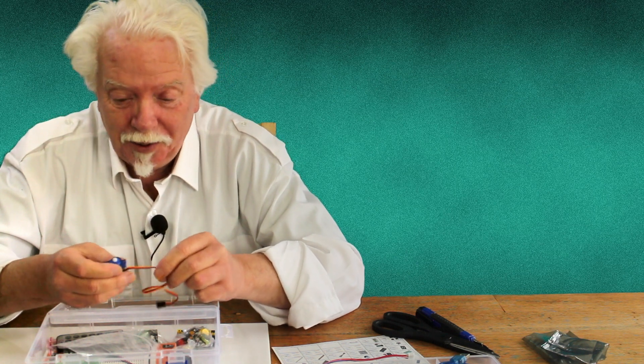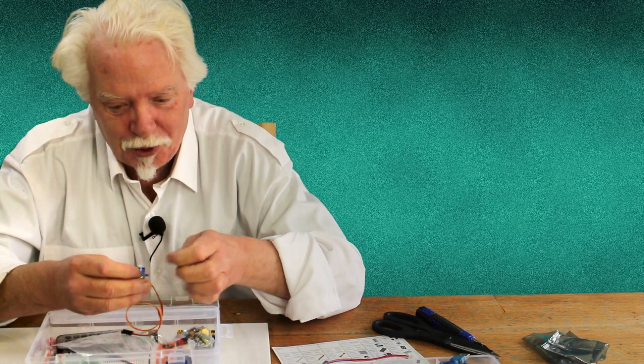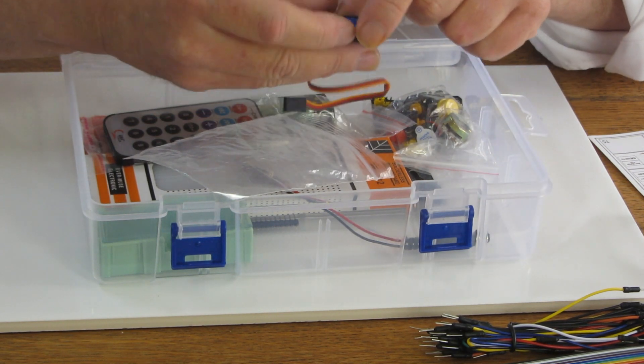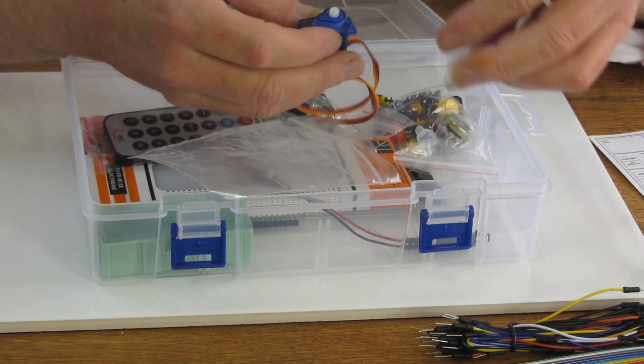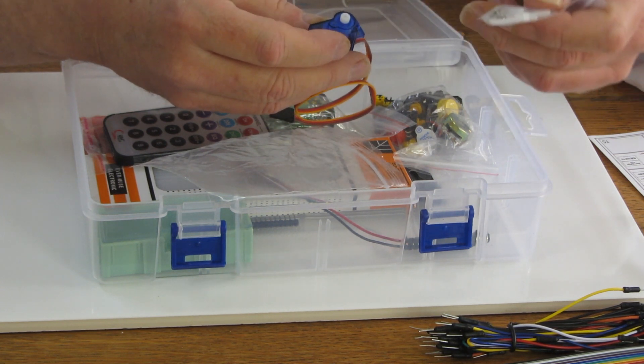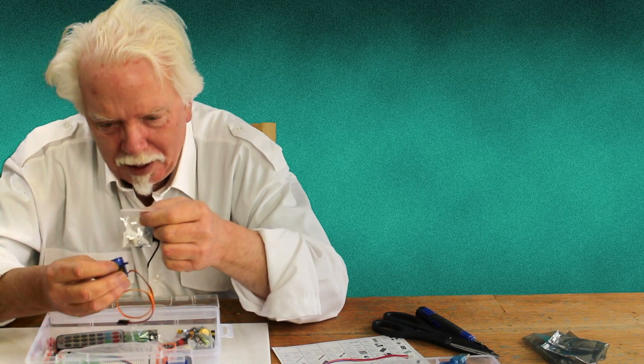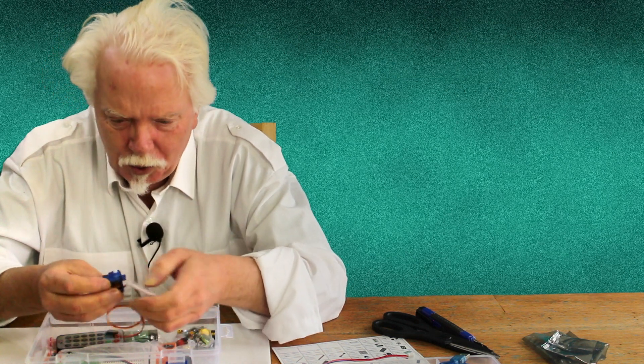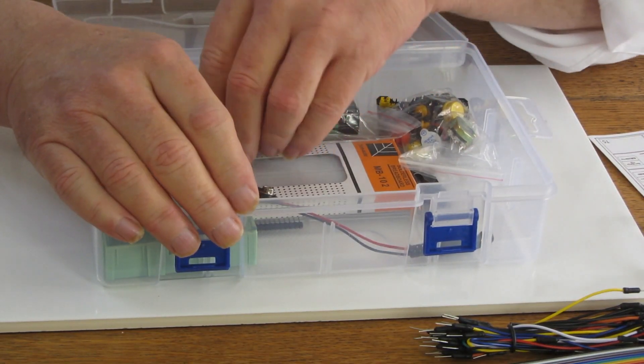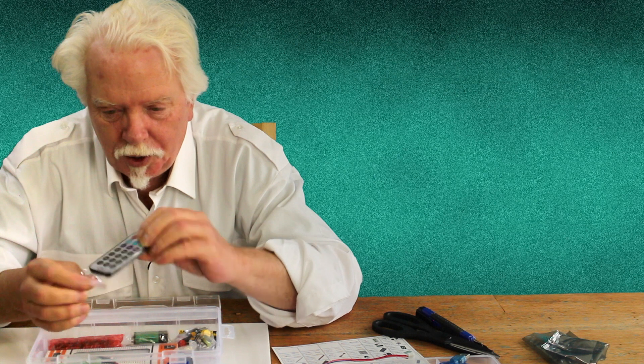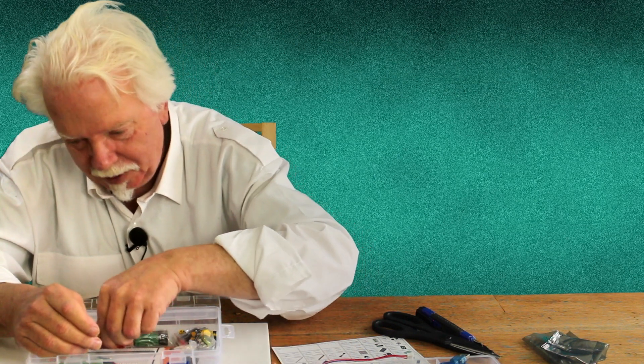When I was a kid, a motor just went round when you applied current to it. But these days, they don't just do that. They can go around a little bit or quite a lot or as much as you tell it to. So with both steppers and servos, they don't just go around, they do stuff. And these are some things that I guess you connect onto the shaft and some teensy-winsy screws.